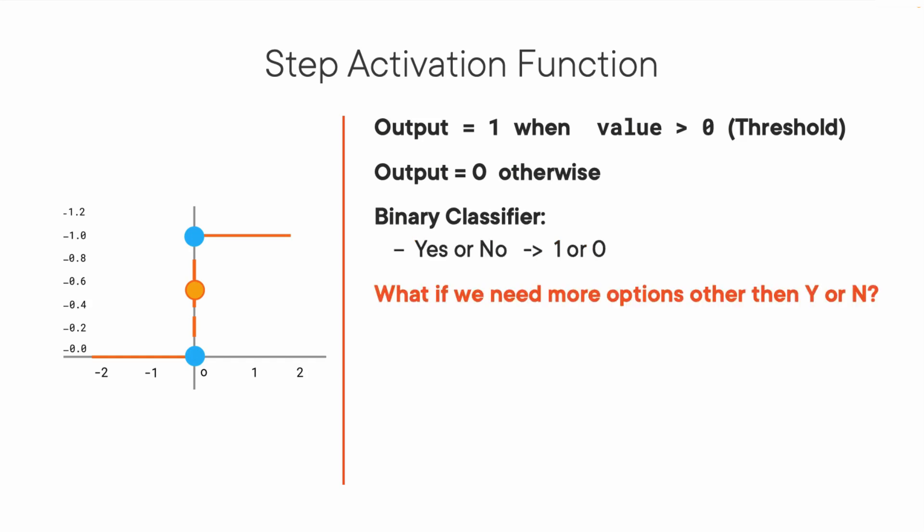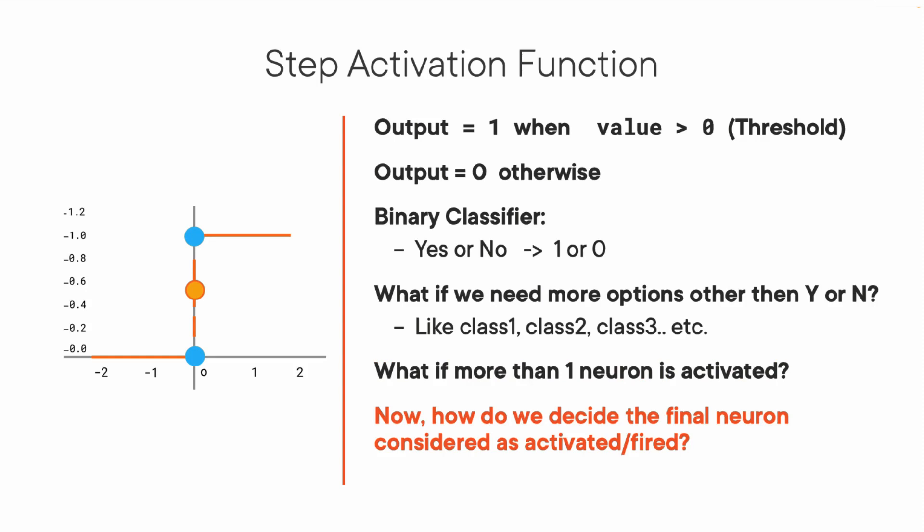Now think about the use case. If we want multiple such neurons to be connected to bring in more classes like class 1, class 2, class 3, etc., what will happen if more than one neuron is activated? All neurons will output a 1 if we're using the step function. Now how do we decide which class is it?